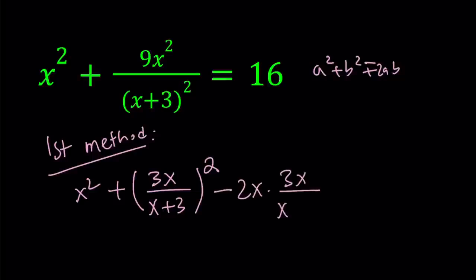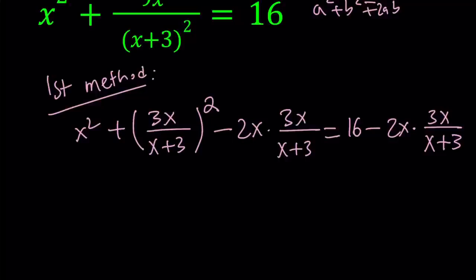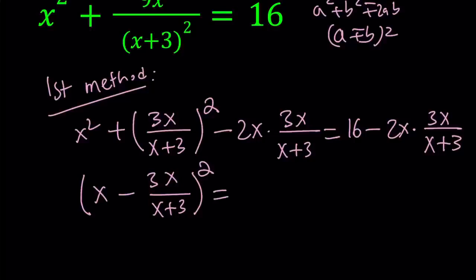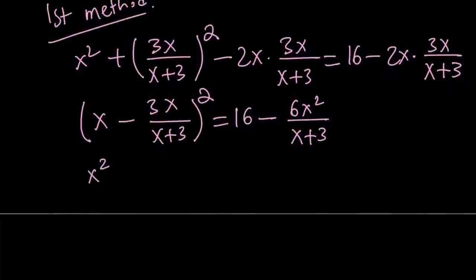So if you go ahead and subtract 2ab from this, and of course you have to do it on both sides. Now when you do it on both sides, this is what you get. On the left hand side, we have a perfect square. So let's go ahead and write it as a minus b quantity squared. So this becomes x minus 3x over x plus 3 in parentheses, that is our quantity squared. And on the right hand side, let's go ahead and simplify. We get 6x squared in the numerator and the denominator is just x plus 3. Now, we subtracted instead of adding because inside the parentheses we're going to get a nicer expression. When you expand it, like make a common denominator, you get x squared plus 3x minus 3x, and that's all divided by x plus 3.